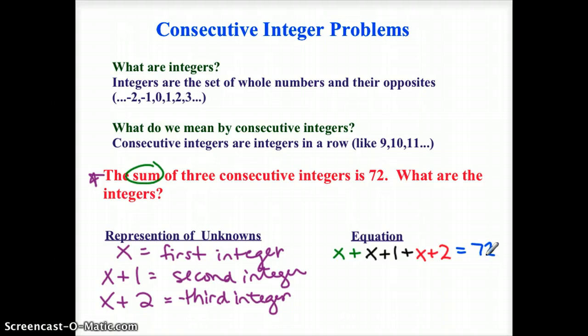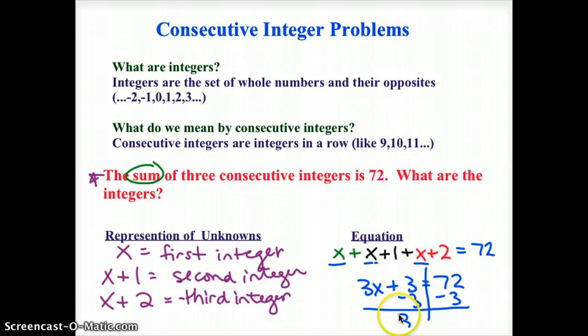So this is a problem I can solve. I'm just going to go back, I'm going to combine all my like terms. It looks like I have x, x, x. So I've got three x's plus 1 and 2, so plus 3 equals 72. I'm going to solve this just like a typical equation. So if 3x equals 69, then it looks like x equals 23.